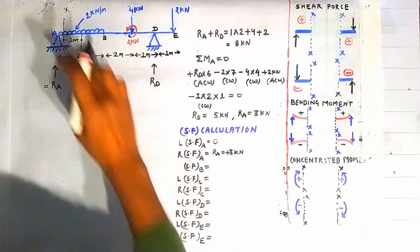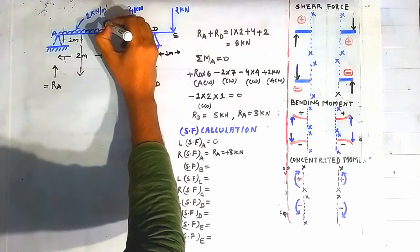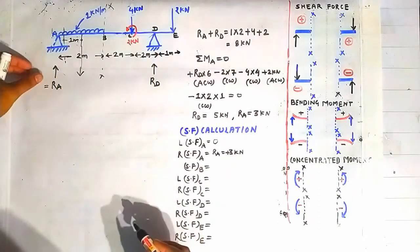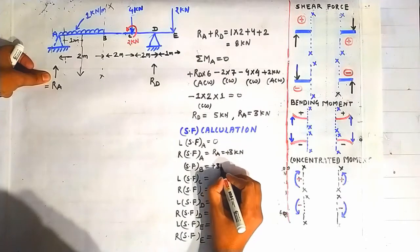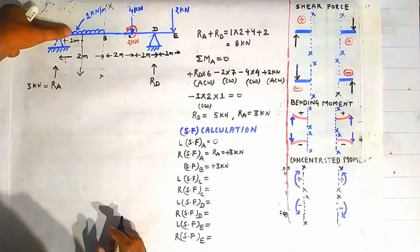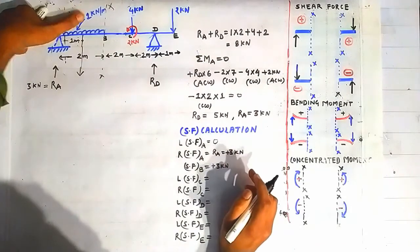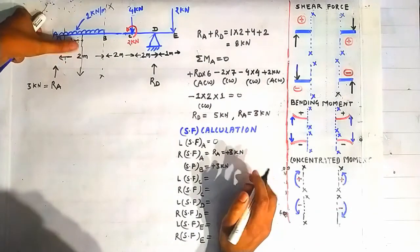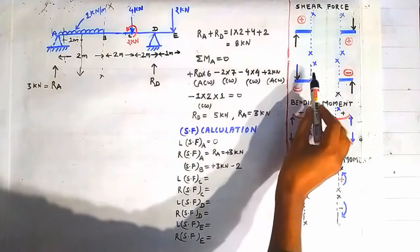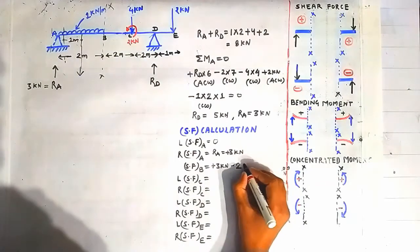For shear force at point B, we draw a section through point B. Looking on the left side: RA contributes a positive shear force of 3 kN. The UDL creates a negative shear force of intensity 1 × distance 2 = 2 kN. So the shear force at point B is 3 − 2 = 1 kN.